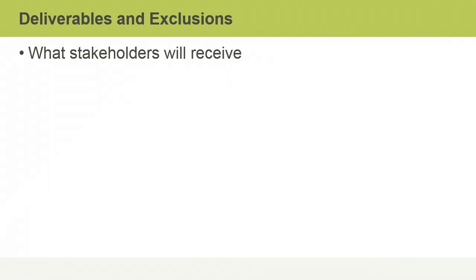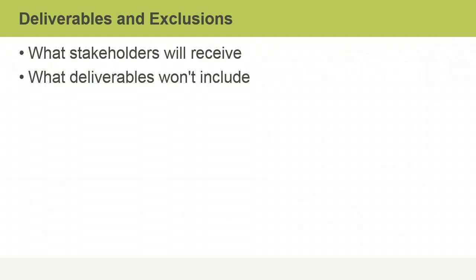A description of project deliverables is another important component. This makes it clear what stakeholders should expect to receive throughout a project and when the project closes. The Project Exclusions section is where you identify what deliverables won't include — in other words, scope exclusions. This ensures stakeholders know and agree about what the project won't deliver.